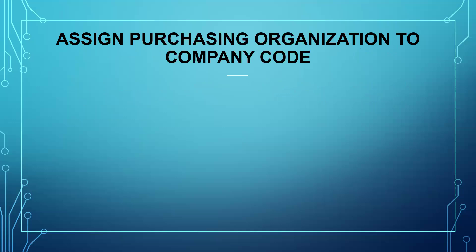What is the relationship between purchase organization and company code? The answer is many-to-one: many purchase organizations to one company code. One company code can have multiple purchase organizations. The question may be asked as: what is the relationship between purchase organization to company code, or company code to purchase organization? One company code, many purchase organizations — this is the expected answer.